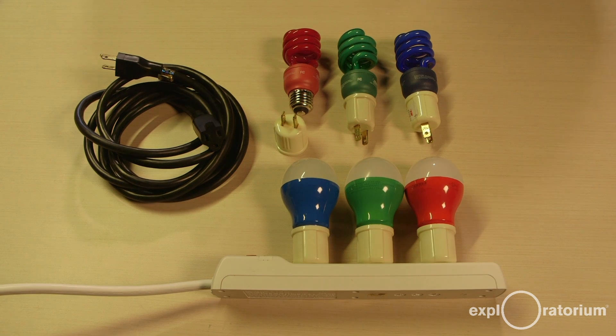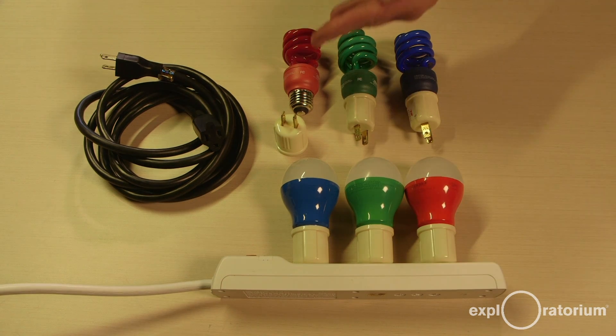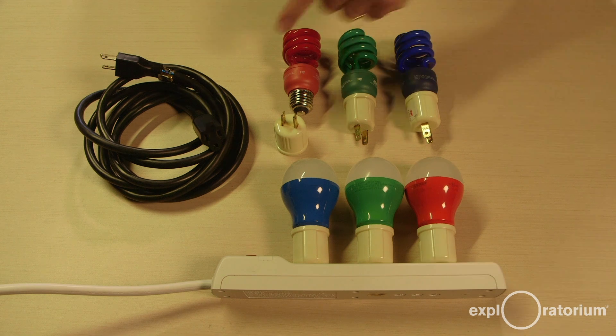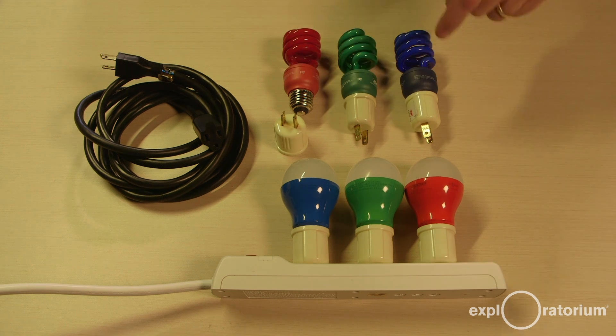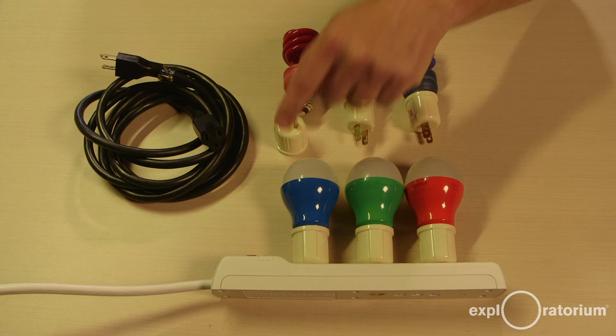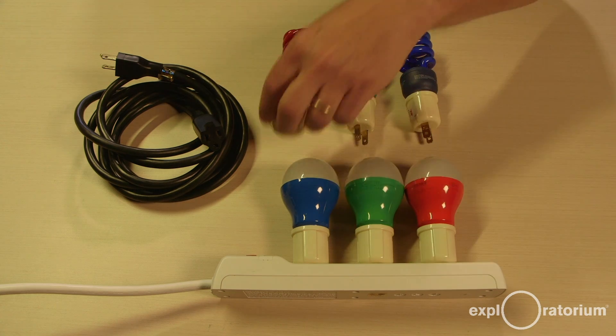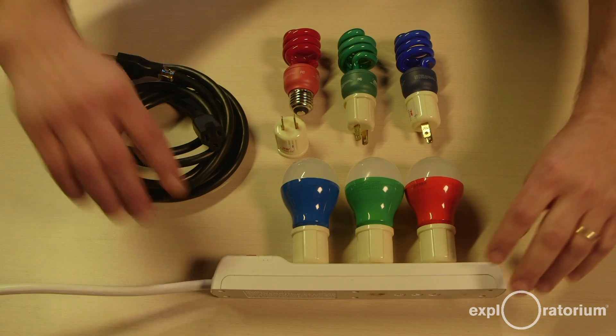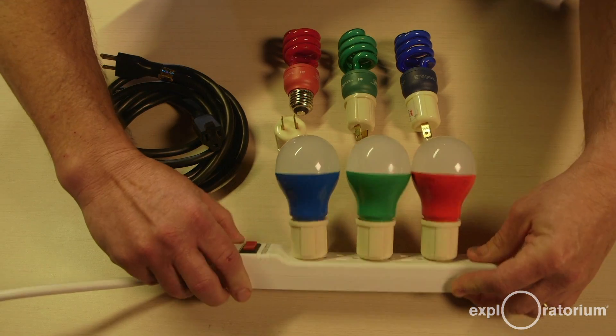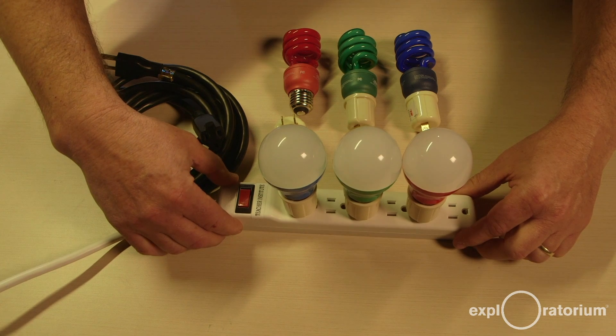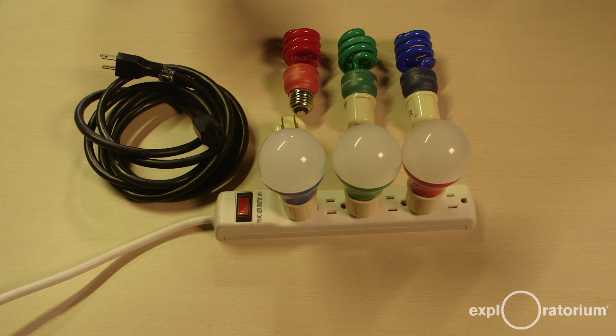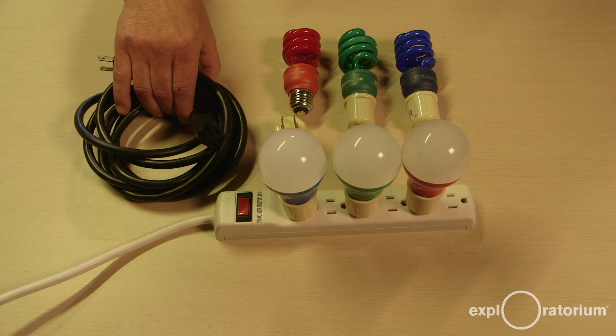Next you're going to need colored light bulbs. You're going to need a red, green, and blue light bulb. These are compact fluorescent light bulbs, but I prefer colored LEDs. You're also going to need a screw and socket. Also really important is a power strip that has multiple outlets. Finally, an extension cord will help quite a bit.